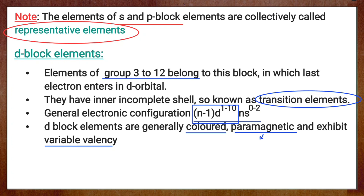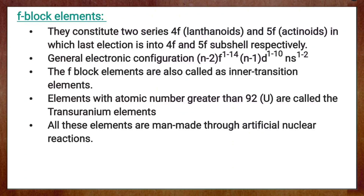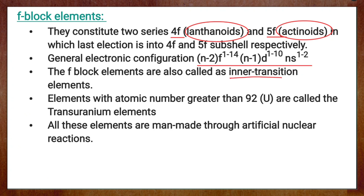The two series of elements — the 4f and 5f series, which are lanthanoids and actinoids — where the last electron enters the 4f or 5f orbitals, are known as F block elements. Their general electronic configuration is (N-2)F¹⁻¹⁴, (N-1)D⁰⁻¹⁰, NS¹⁻². They are also known as inner transition elements. Elements with atomic number greater than 92 — that is, greater than uranium — are called transuranium elements. These transuranium elements are not found in nature; they are synthesized artificially through nuclear reactions.